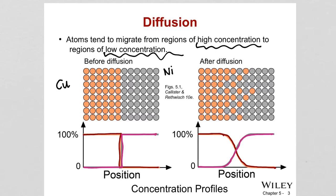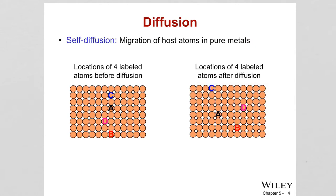This is an example of interdiffusion, because copper has migrated into nickel and nickel has migrated into copper. Self-diffusion is the migration of host atoms in pure metals.